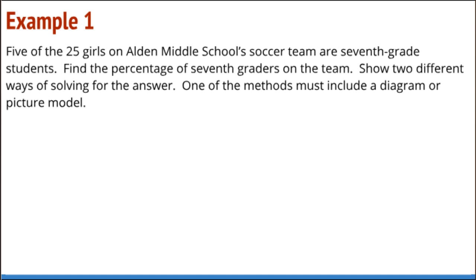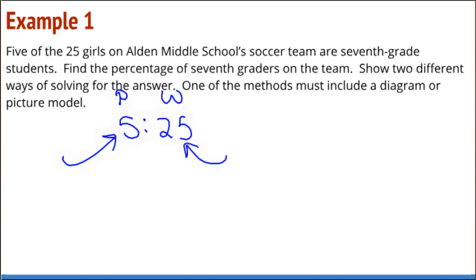There are a few things I want to reason through. First, are there 100 girls on the soccer team? The answer is no. But as we work with the percent, in some way we're going to imagine if there were 100 girls on the soccer team, then how many would be seventh graders? We have this ratio — this part to whole — five to 25, part to whole. This represents the number that are seventh graders, and this represents the whole team.